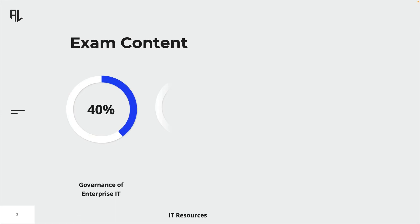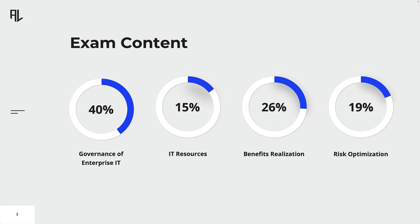The exam is designed to test your knowledge and expertise in four specific domains: governance of enterprise IT, IT resources, benefits realization, and risk optimization. Each domain makes up a certain percentage of the exam. For example, 40% of the exam will be about governance of enterprise IT, which means you can expect around 60 questions about that topic.